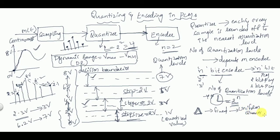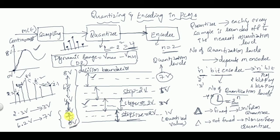Such a quantizer where the step size is fixed is called a uniform quantizer. If the step size is not fixed, it is called a non-uniform quantizer. If we take a 3-bit encoder instead, the number of quantization levels is 2^3 = 8, so the step size becomes 1 volt.